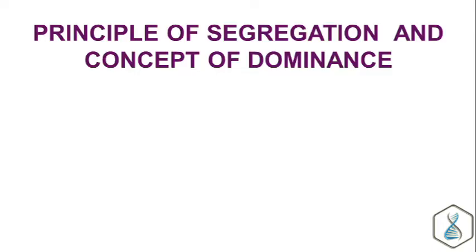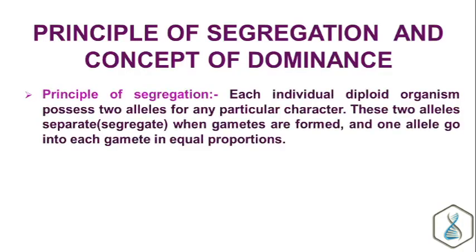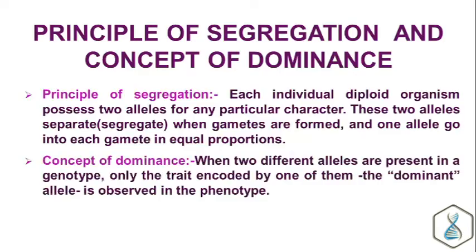What is the principle of segregation? The principle of segregation states that each diploid organism possesses two alleles for any particular character, and these two alleles separate or segregate when gametes are formed, with one allele going into each gamete in equal proportions. What is the concept of dominance? The concept of dominance states that when two different alleles are present in a genotype, only the trait encoded by one of them — the dominant allele — is observed in the phenotype.